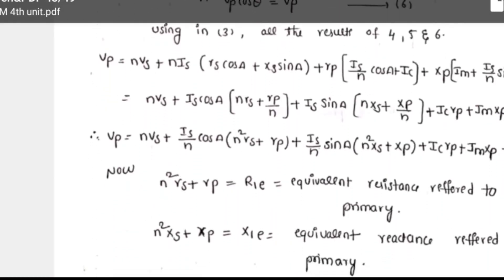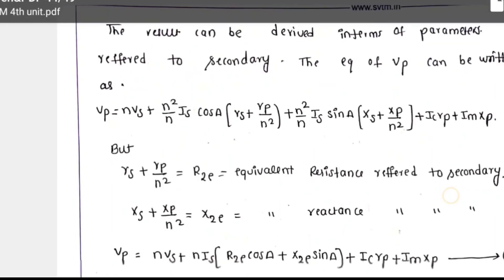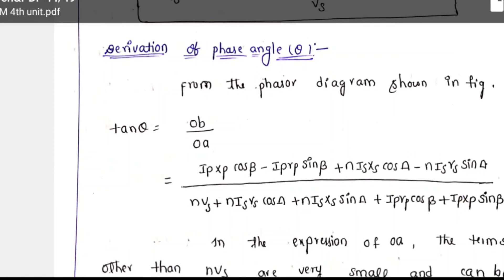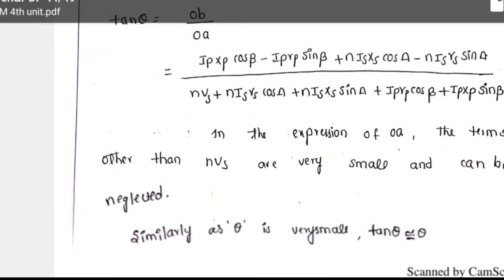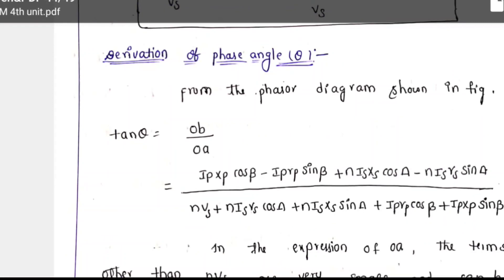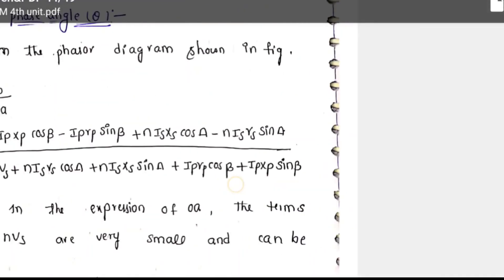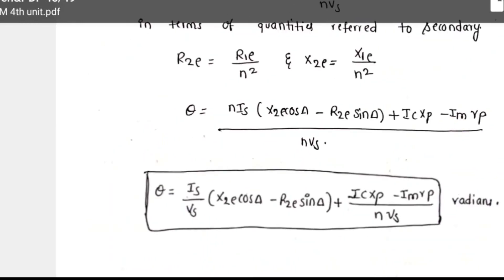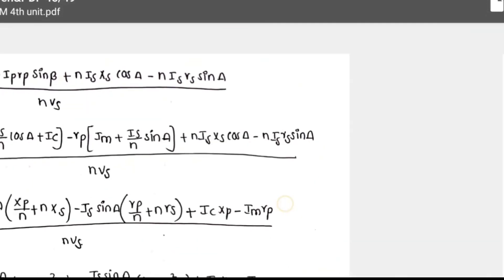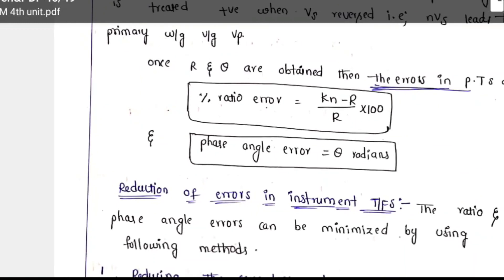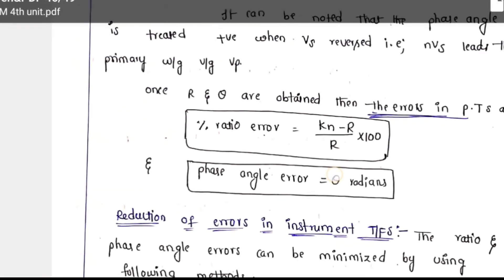You can download the PDF file and prepare from it — it is written by previous students. The derivation of phase angle theta for PT: again we apply theta for the triangle from the phasor diagram, applying tan(theta) for the triangle OVA, and similarly derive it. The ratio error of PT is KN minus R — the difference between the nominal ratio and the actual ratio divided by the actual ratio. The phase angle is theta, where there is a 180-degree phase displacement.